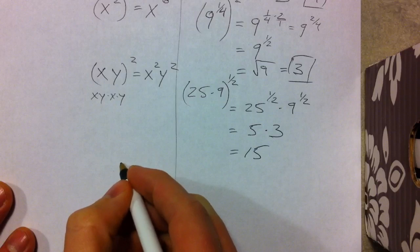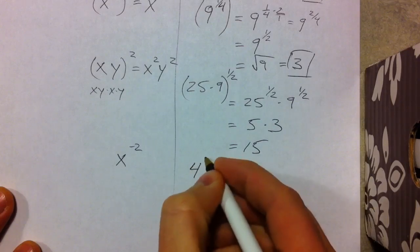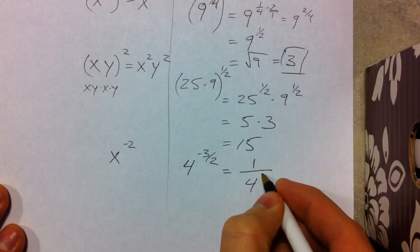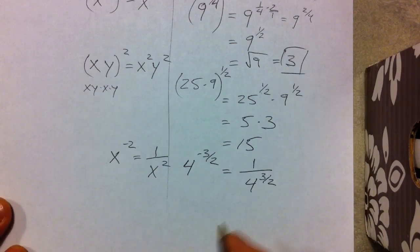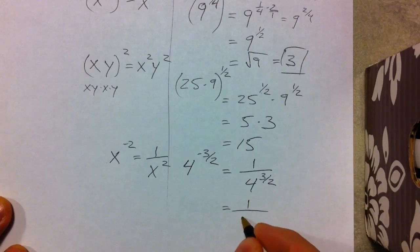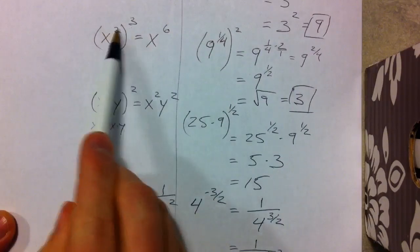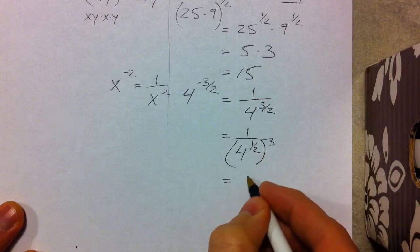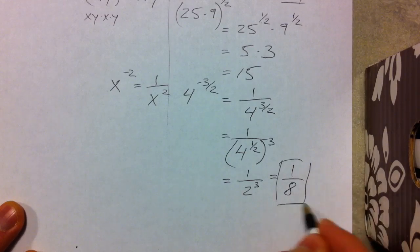Next property — negative exponents. If we have 4 to the negative 3 halves, that's the same as 1 over 4 to the positive 3 halves. We make it smaller first by taking care of the 1 half part: the square root of 4 is 2. So we get 1 over 2 cubed, which is 1 over 8, because 2 times 2 times 2 is 8.